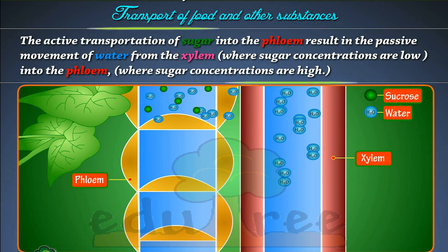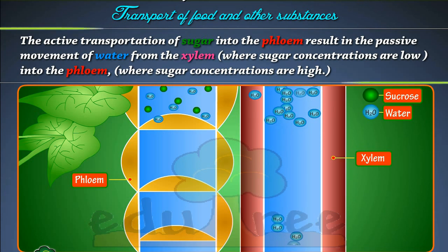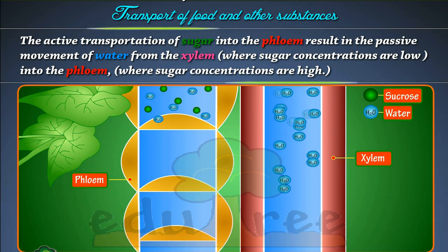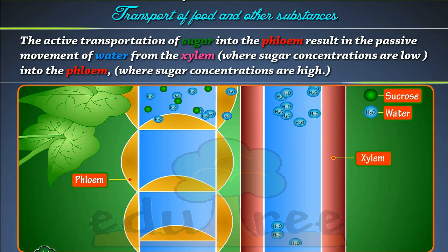results in the passive movement of water from the xylem, where sugar concentrations are low, into the phloem, where sugar concentrations are high.